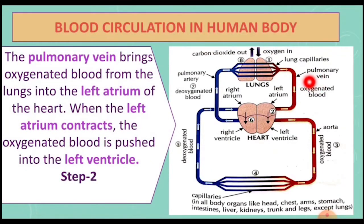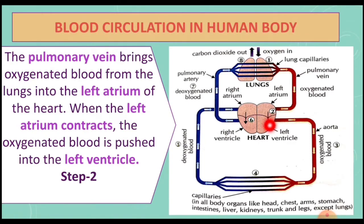Step two: the pulmonary vein brings oxygenated blood from the lungs into the left atrium of the heart. When the left atrium contracts, the oxygenated blood is pushed into the left ventricle.